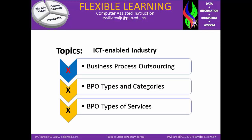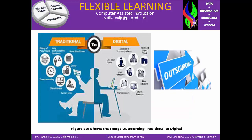The topics are ICT-enabled industry and we have sub-topics: business process outsourcing, BPO types and categories, and BPO types of services. Figure 39 shows the image of outsourcing from traditional to digital. As you notice, it is more paper-based on one side, and this is what you call computer-based or digital-based transactions. It is considered to be an outsourcing from traditional going to digital.